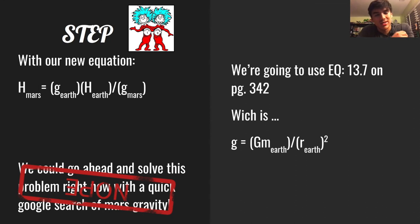They want us to use equation 13.7 from the textbook on page 232. The equation says that gravity on any given planet equals the gravitational constant times the mass of the planet divided by the radius of the planet squared.